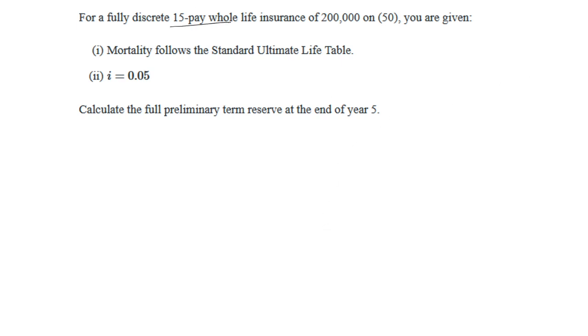We have a fully discrete 15-pay whole life insurance of $200,000 on age 50. We can use the Standard Ultimate Life Table with an interest rate of 5% to calculate the full preliminary term reserve at the end of year 5.